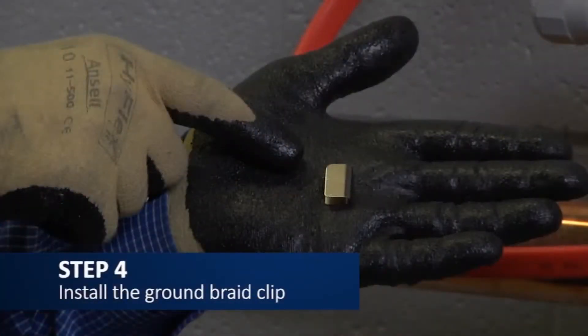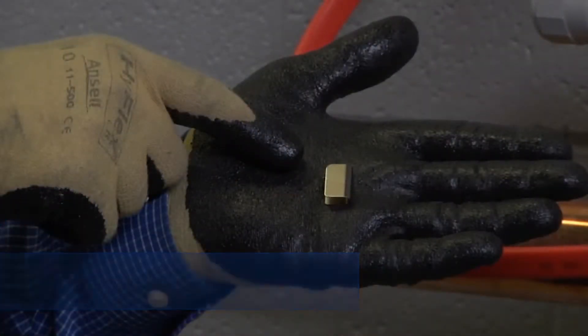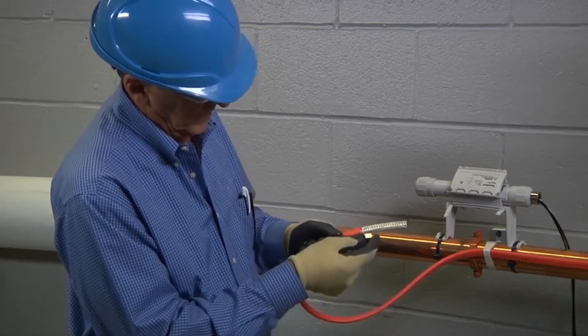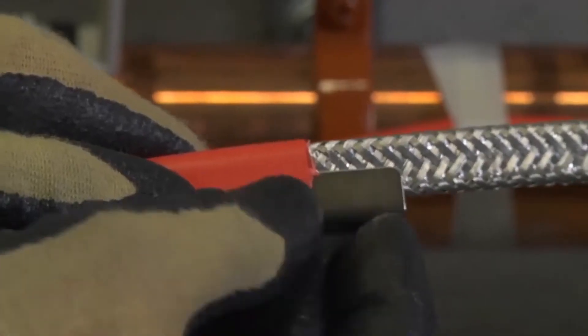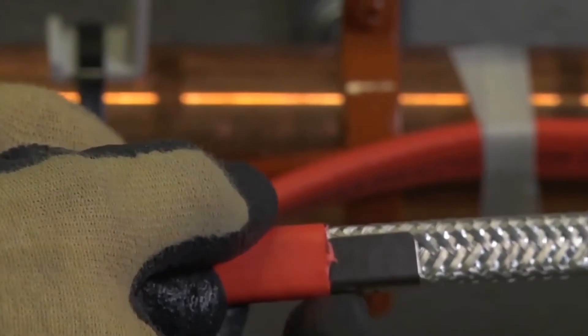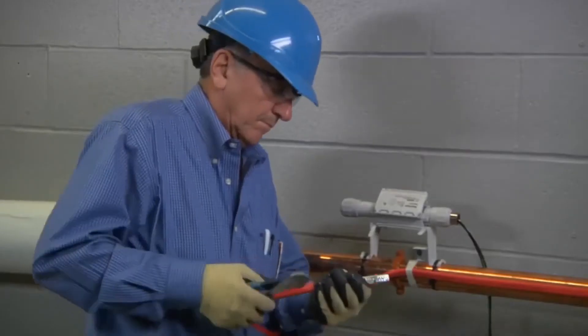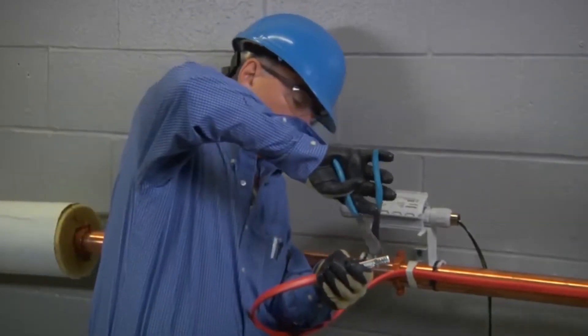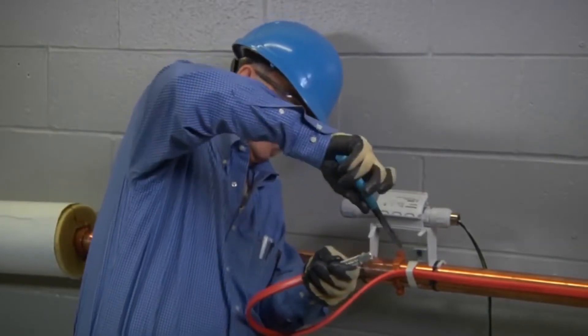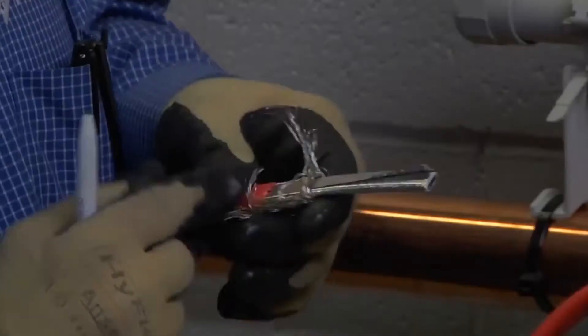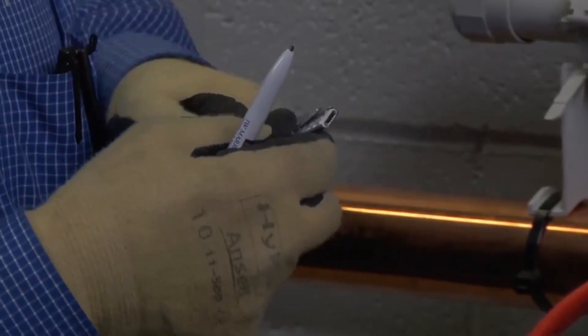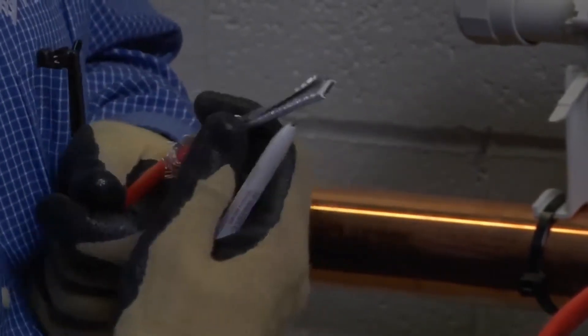Next, install the ground braid clip over the heating cable by pinching it lightly in place using your fingers, and sliding the clip up the cable until it touches the outer jacket. Using your wire cutters, cut away one inch of the ground braid from the end of the heating cable, and pull the exposed braid back over the ground braid clip and the outer jacket.